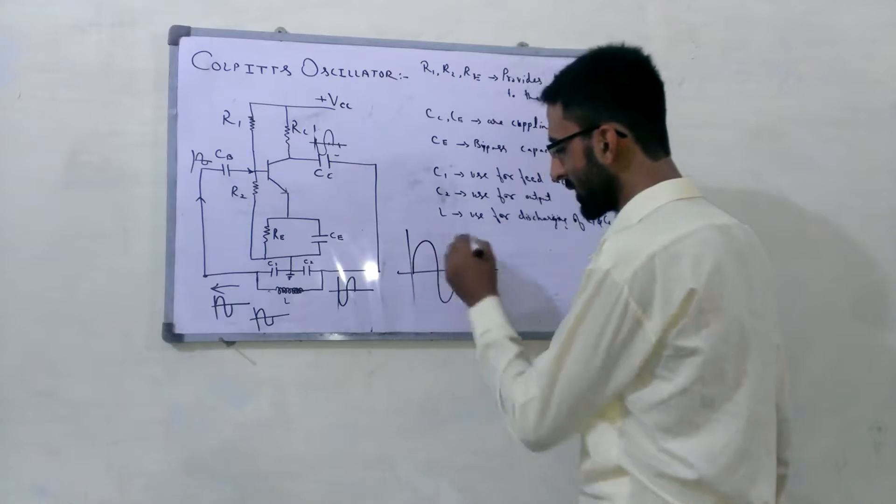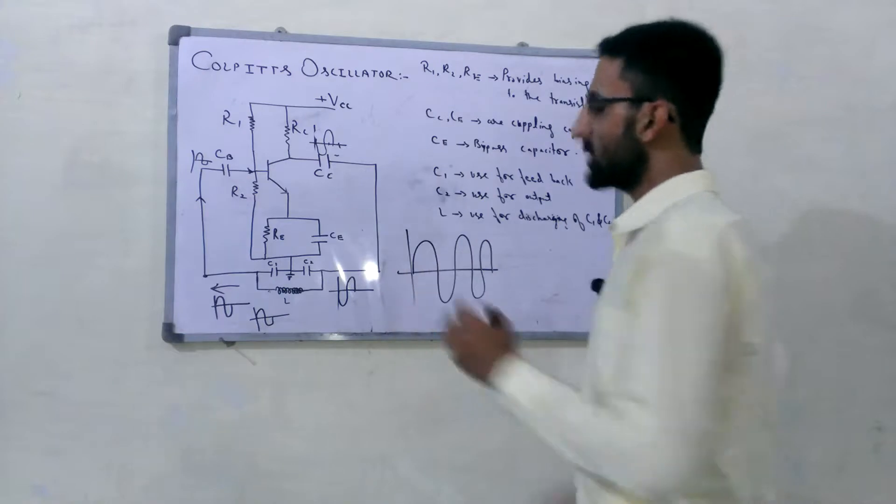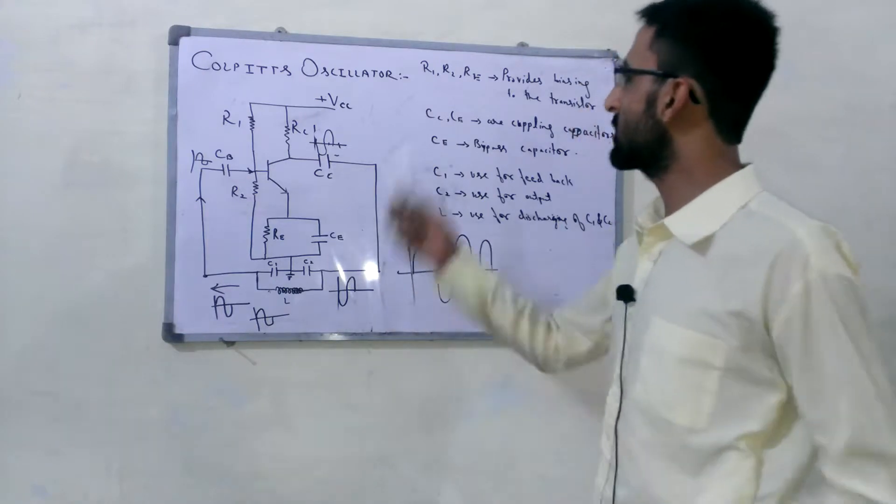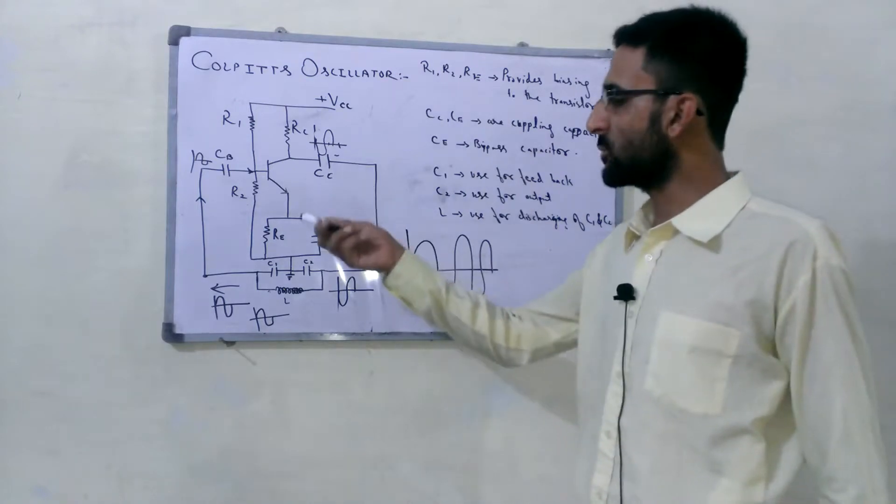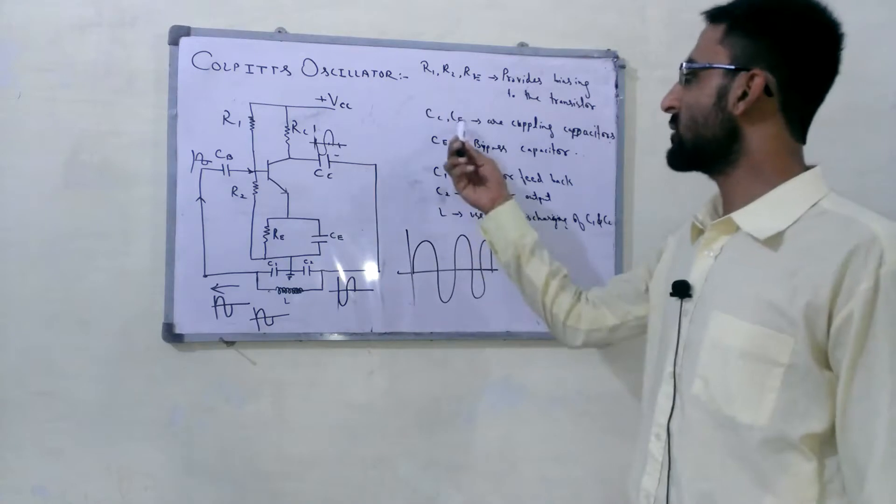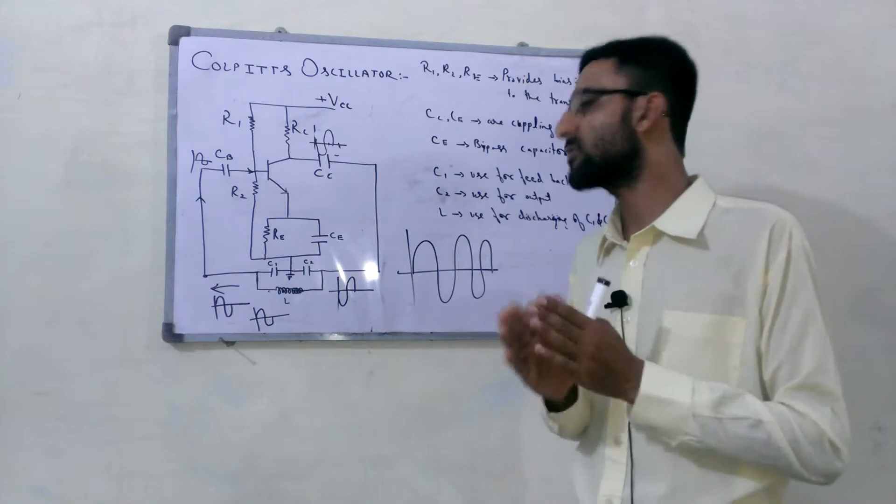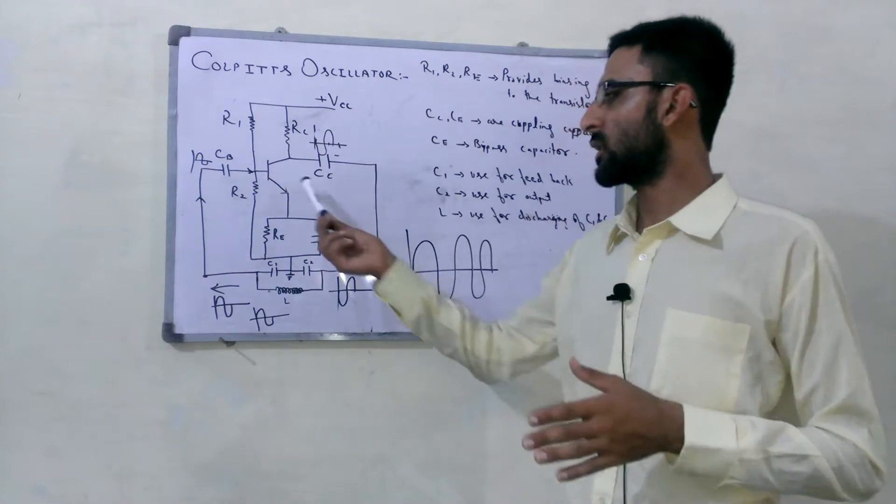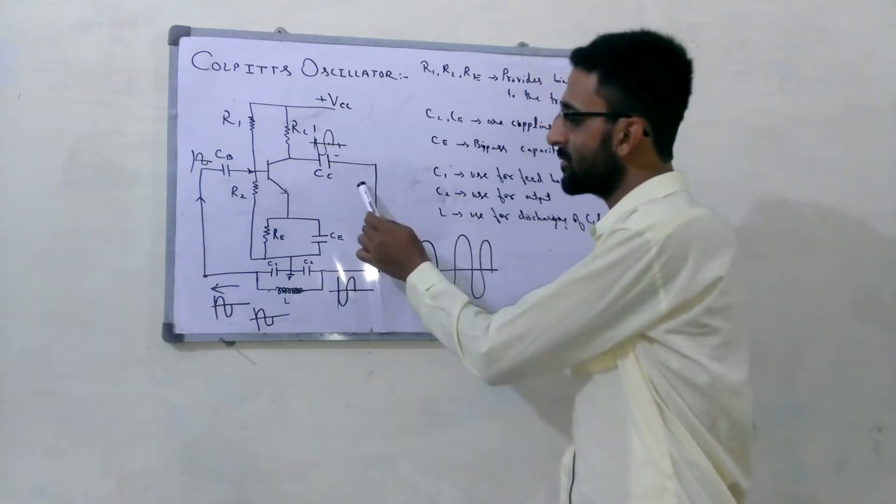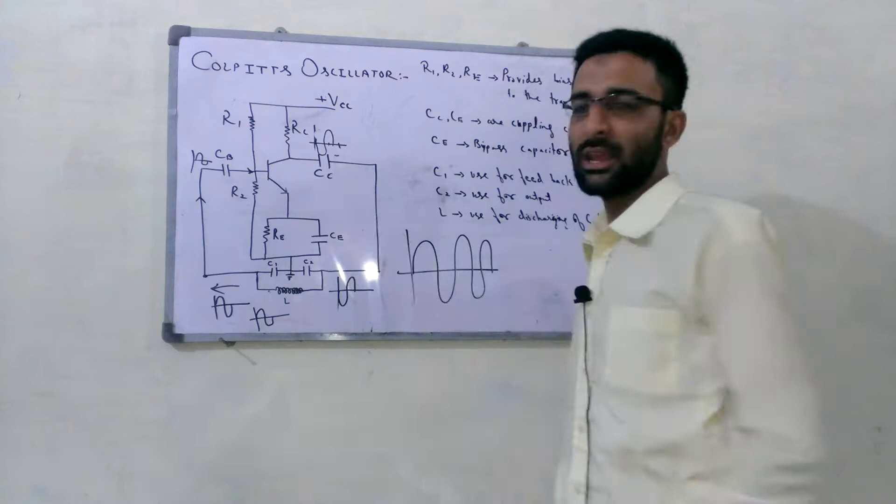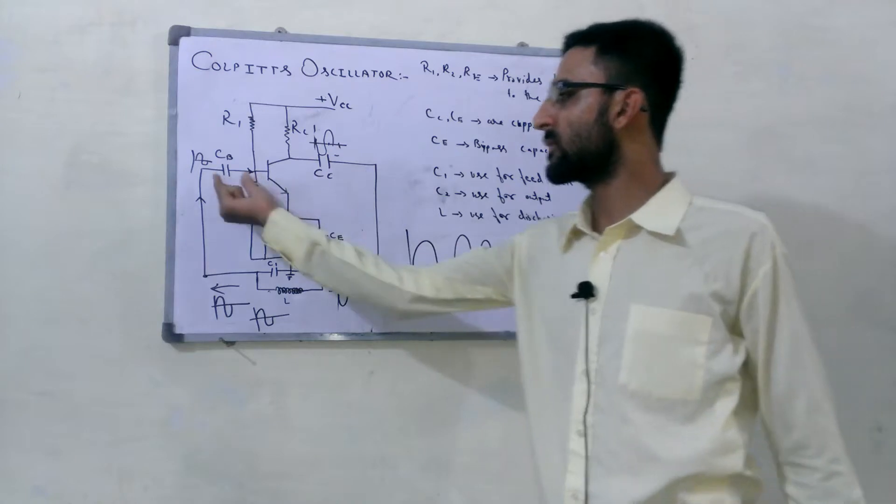Here the components are explained as R1, R2, R3 provide sufficient biasing to this transistor. CC are coupling capacitors which couple two types of signals, the two types of circuits. Here in this circuit, AC and DC are both, and in this circuit, purely AC. Then this is called coupling capacitor, and this is also called coupling capacitor.